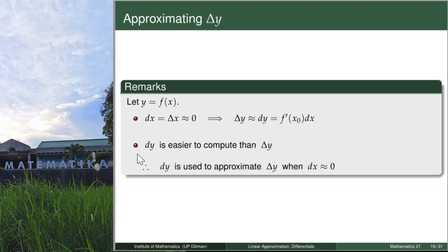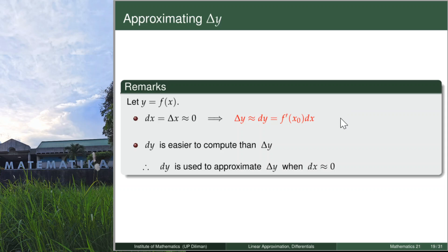Since dy is easier to compute than the actual change in y — delta y — we use dy to approximate delta y when dx is small or close to zero. This formula is what we will use for the next few examples, which are all about approximating delta y in different situations.